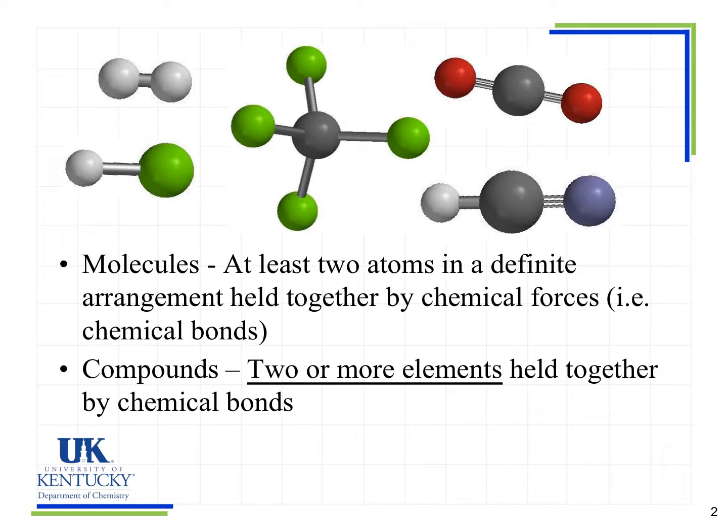When we look at the first example up here in the upper left corner, we know that these atoms are the same element because they're represented by the same color. If we were looking at the actual formula, we would see that they have the same chemical symbol. So this substance is a molecule but it is not a compound because it only has one type of element present.